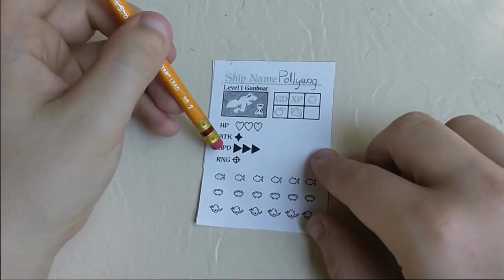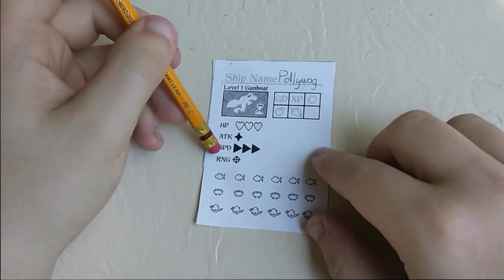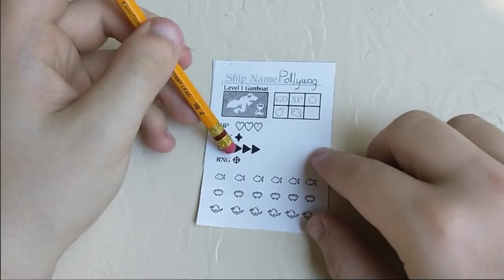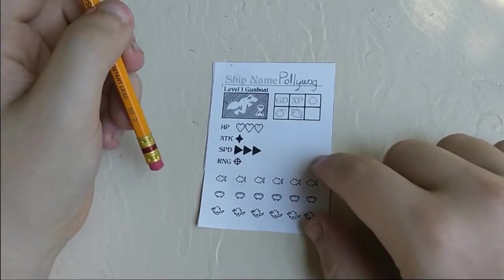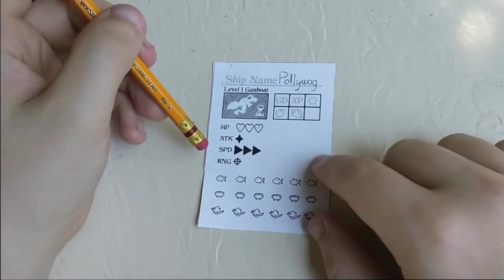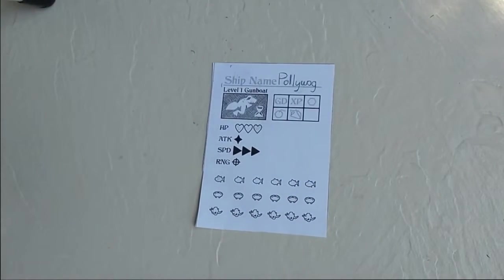Speed is how many times you can flick to move, and I'll show you how to flick later. Then range is how many times you can flick to shoot a cannon. That's basically the ship card and how that works.